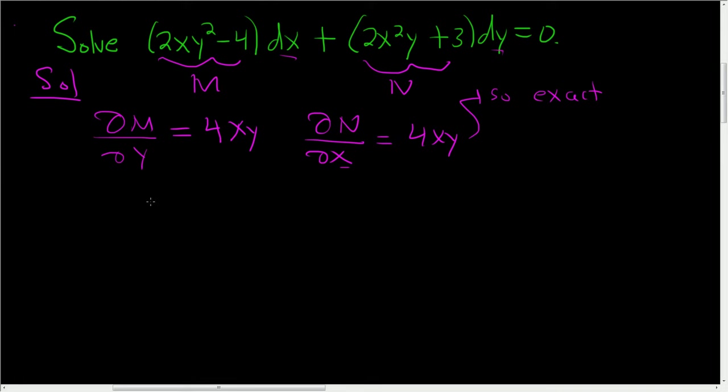Okay, so we have an exact equation. What does that mean? There exists a function f such that the partial derivative of f with respect to x is equal to big M.